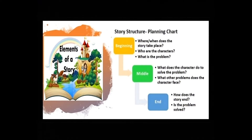Kahaani di shuru aato baad — middle of the story. What does the character do to solve the problem? Jho character jho kahaani de vich paatra han, oso problem noo solve karan lehi ki karde han? What other problems does the character face? Ik main problem noo solve karde hoi, unnan noo hor kediye kediyaan chizhandha saamna karna pehanda hai. And how does the story end? Kahaani khatam kime hoi — is the problem solved? Kya kahaani khatam hoande time te problem solve ho gayi si?